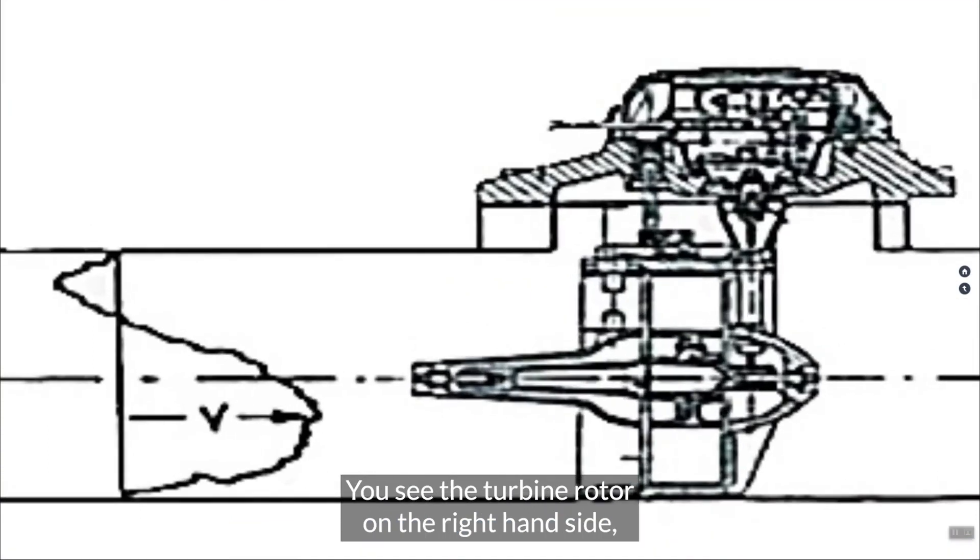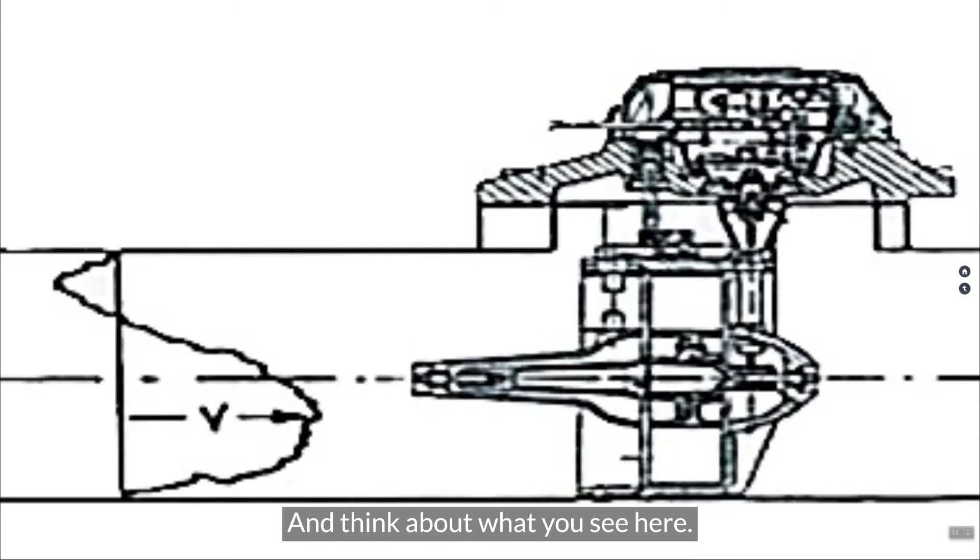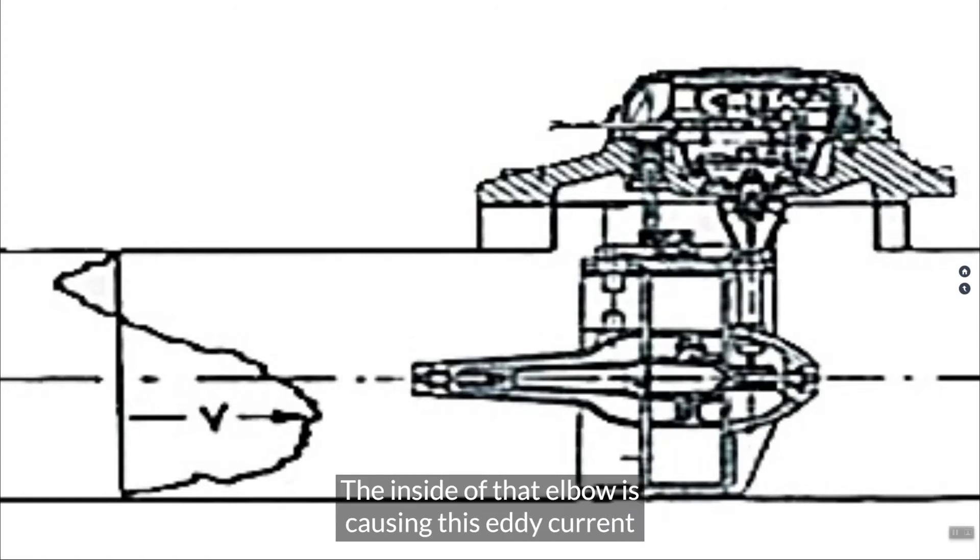If we take a closer look at this, this is what's happening. You see the turbine rotor on the right hand side. The left-hand side shows you that velocity profile. And think about what you see here. Towards the top quarter of the pipe, you actually have a reversing of flow. You have an eddy current effect here. The inside of that elbow is causing this eddy current, meaning that as it approaches the turbine element, it's almost trying to make that turbine blade go in reverse.